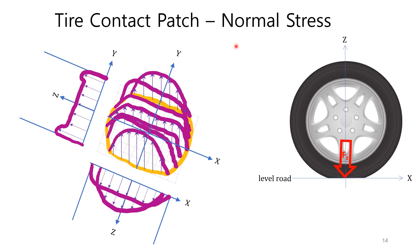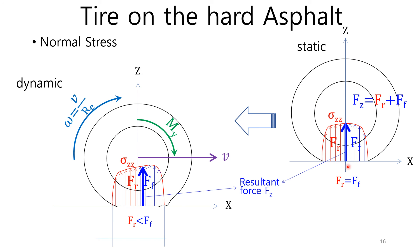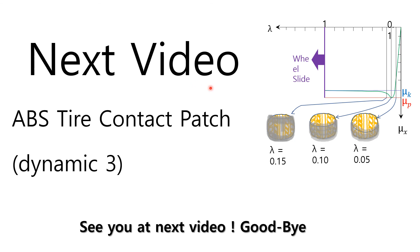If you watch the previous videos, you can easily understand the upcoming videos. In the previous video E2, I explained the static stress distribution of the tire contact patch. There is also a video explaining the stiffness curve in each direction. Recently, I explained how the reaction force applied to the tire on the road with high rigidity appears under static and dynamic conditions. The next video will be tire contact patch part 3, where I will explain the relationship between tire contact patch, slip, and friction coefficient.